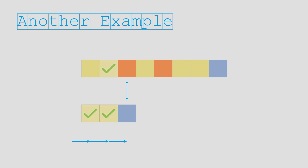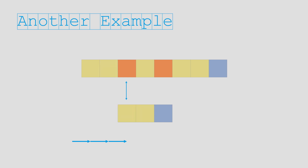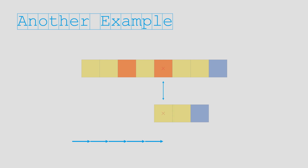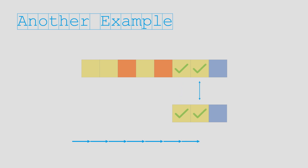Instead, we could hold our position on the tape but jump back within the pattern, because we know that this yellow could be the start of the pattern now. All we have to do is compare the current color to the one after the first yellow in the pattern. The idea of holding positions on the tape and jumping within the pattern is the basis of how we perform the Knuth-Morris-Pratt algorithm.